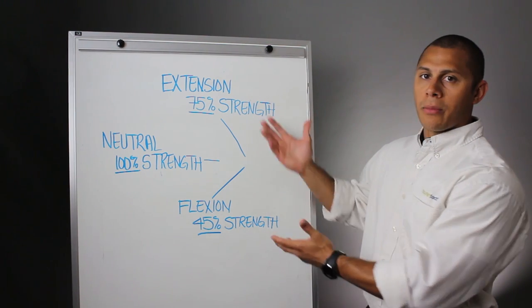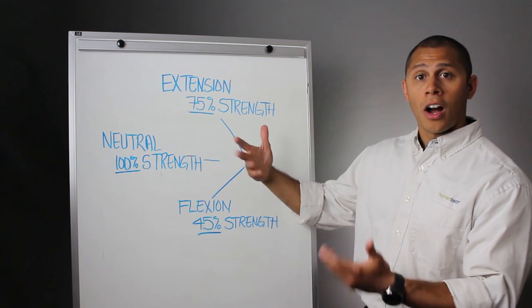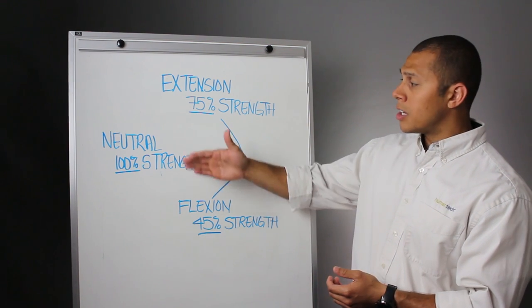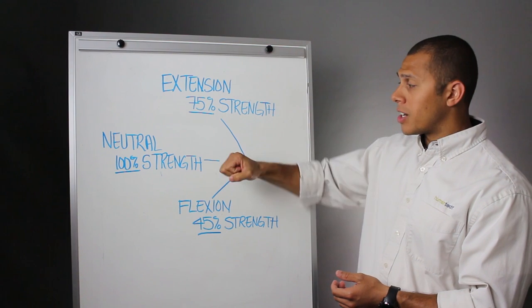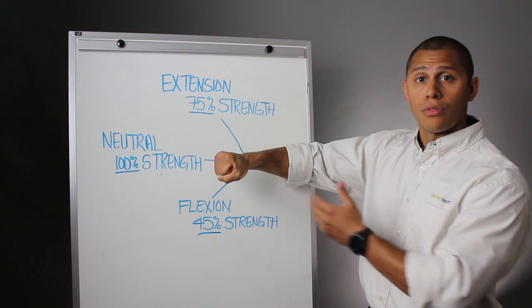And that's why this diagram is here, to identify how strong we are in awkward postures. We can see in a neutral posture, we can create 100% of our voluntary contraction straight through the forearm.